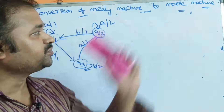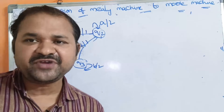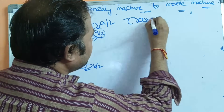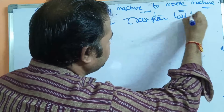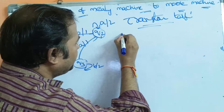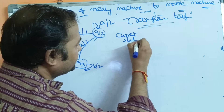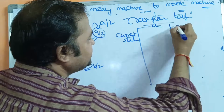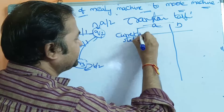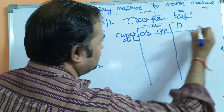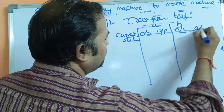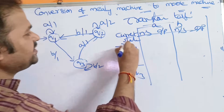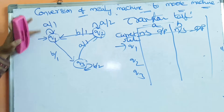We are converting a Mealy machine to a Moore machine. First, let us construct the transition table for this Mealy machine. The table has two columns: the first column represents the current state, and the second column represents the next state based on input symbols a and b. The states are Q1, Q2, and Q3, where Q1 is the initial state.